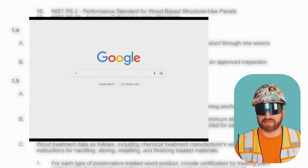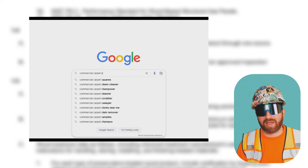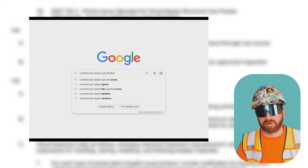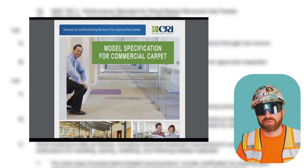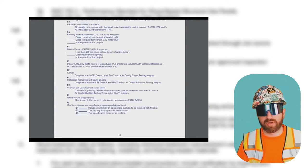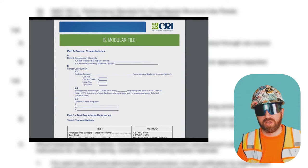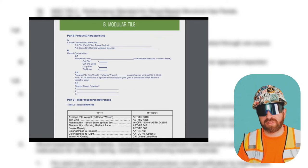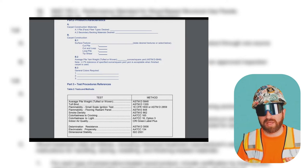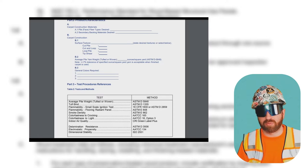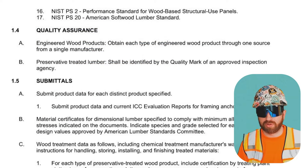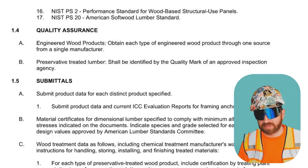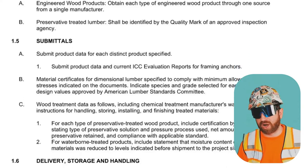Here's an example of an online material vendor providing their own specification section for a carpet installation. As you can see, an architect can just take this, copy it, paste it into their spec book, and adjust it as needed to meet the requirements of the project. They usually want to stay closer to what the manufacturer recommends to stay in alignment with the installation of the product.